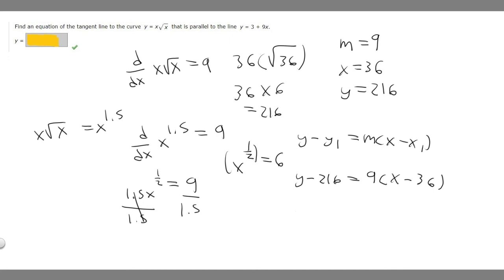We can just solve. So y minus 216 is equal to 9x. And then 36 times 9 is 324. And we just want to add 216 to both sides.